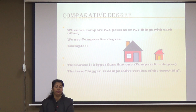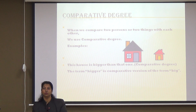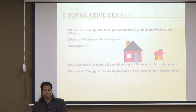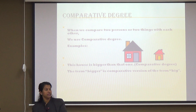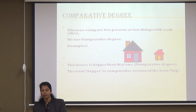Let's come to comparative degree. When we compare two or more things with each other, we use comparative degree. Let's take another example: this house is bigger than that one. You can see two houses — one house looks bigger than the other. This is the comparative degree. The term 'bigger' is the comparative version of the term 'big'.